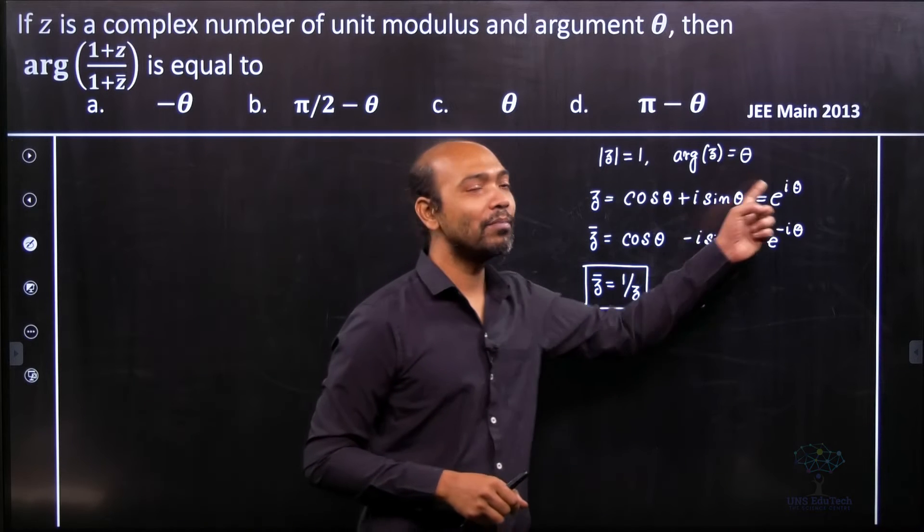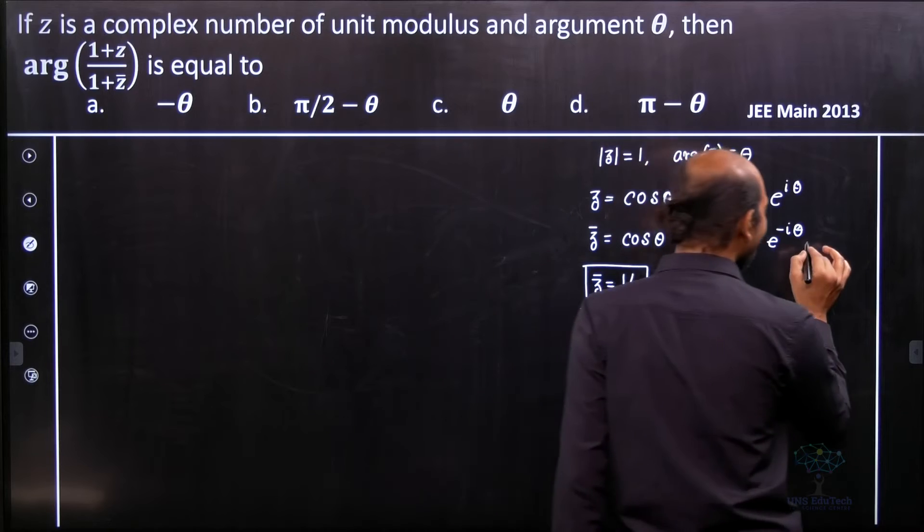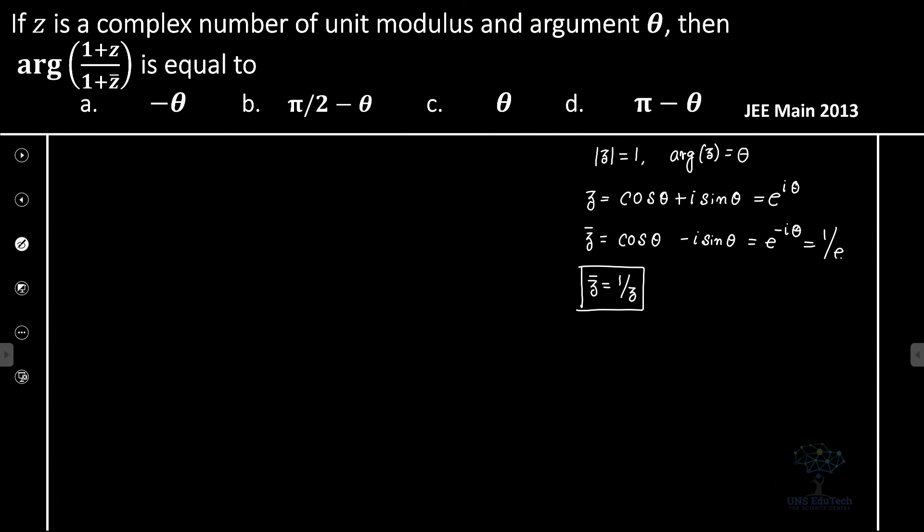Why? We can see that 1 by e to the power i theta, that is e to the power minus i theta. This is actually 1 by e to the power i theta, just indices and all that stuff.